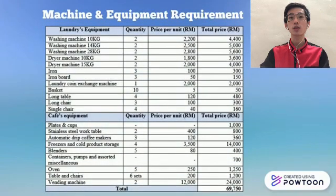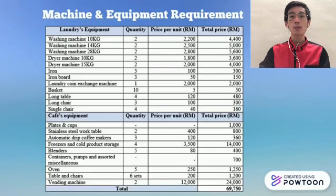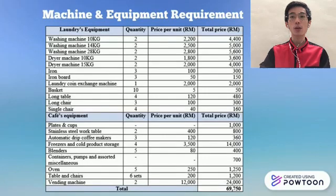The table shows all the machines and equipment needed to produce business products and provide services to customers. All the machines and equipment used in Happy House are to provide unique service to customers. Most of the machines and equipment are from Japanese brands, as they are more durable.